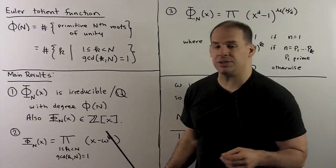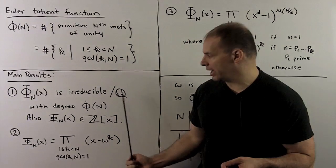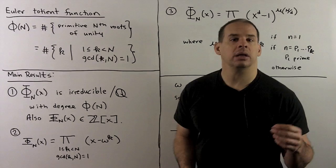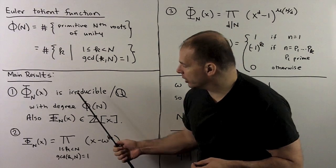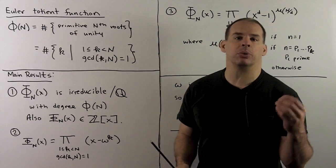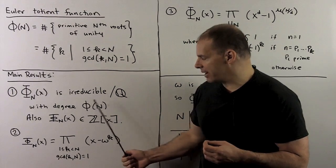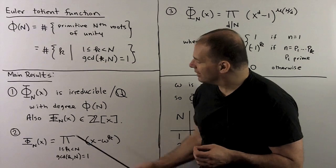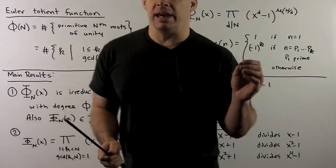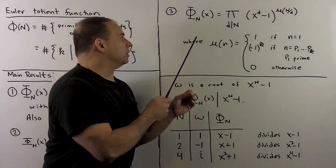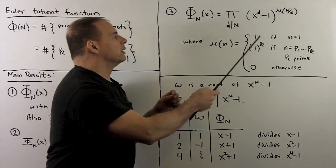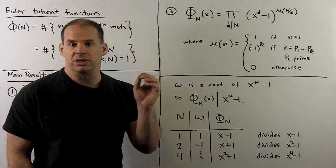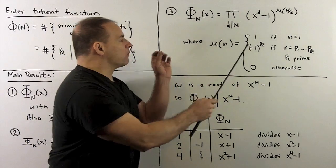First, the nth cyclotomic polynomial is irreducible over the rationals with degree φ(n). The coefficients of these polynomials are always integers. For a formula: the roots are precisely the primitive nth roots of unity, giving degree φ(n). In practice, to compute these polynomials explicitly, we use the following formula: the nth cyclotomic polynomial equals the product over all divisors d of n of (x^d − 1)^(μ(n/d)), where μ is the Möbius function.